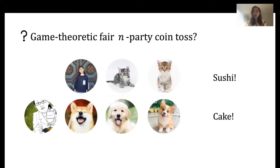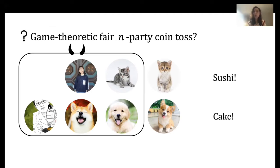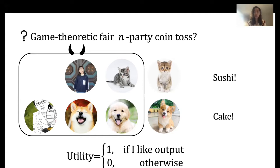In multi-party coin toss, several players get together to toss a binary coin. Each player has a preference that is publicly available. For example, kittens and I prefer sushi — we call them sushi people — while puppies and Elaine prefer cake, so we call them cake people. Some of these players will get together to form a coalition and coordinate to bias the output. The utility is natural: if I like the output, I gain utility one, and the utility of a coalition is the sum of utilities of its players. Therefore, the preference of a coalition is the preference of the majority players in that coalition.